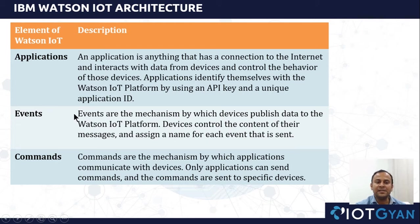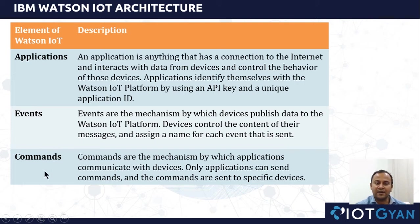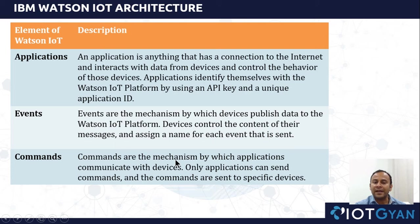Next, what is an event? An event means real-time status — whenever we connect a sensor and send real-time information like humidity, temperature, or anything else from the device to the cloud, that is called an event. What is a command? A command is whenever we send some action to be performed on the devices. These are the mechanisms by which any application can communicate with and trigger actions on devices. One important point: only applications can send commands, and commands are sent to specific devices only.